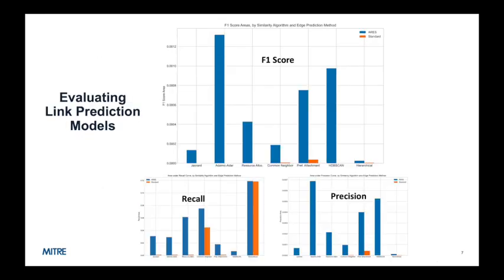This shows the areas under each of the F1 score curves in the previous slide, along with areas under the corresponding recall and precision curves. These plots also include performance with HDBSCAN clustering, which stands for Hierarchical Density-Based Spatial Clustering of Applications with Noise. HDBSCAN does not have a similarity threshold parameter, so it does not appear in the previous slide.